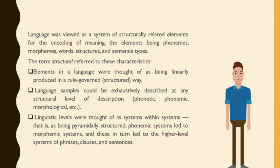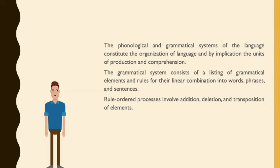Language samples could be exhaustively described at any structural level — phonetic, phonemic, morphological, etc. Linguistic levels were thought of as systems within systems, pyramidally structured: phonemic systems led to morphemic systems, which in turn led to higher-level systems of phrases, clauses, and sentences. The grammatical system consists of a listing of grammatical elements and rules for their linear combination into words, phrases, and sentences. Rule-ordered processes involve addition, deletion, and transposition of elements.